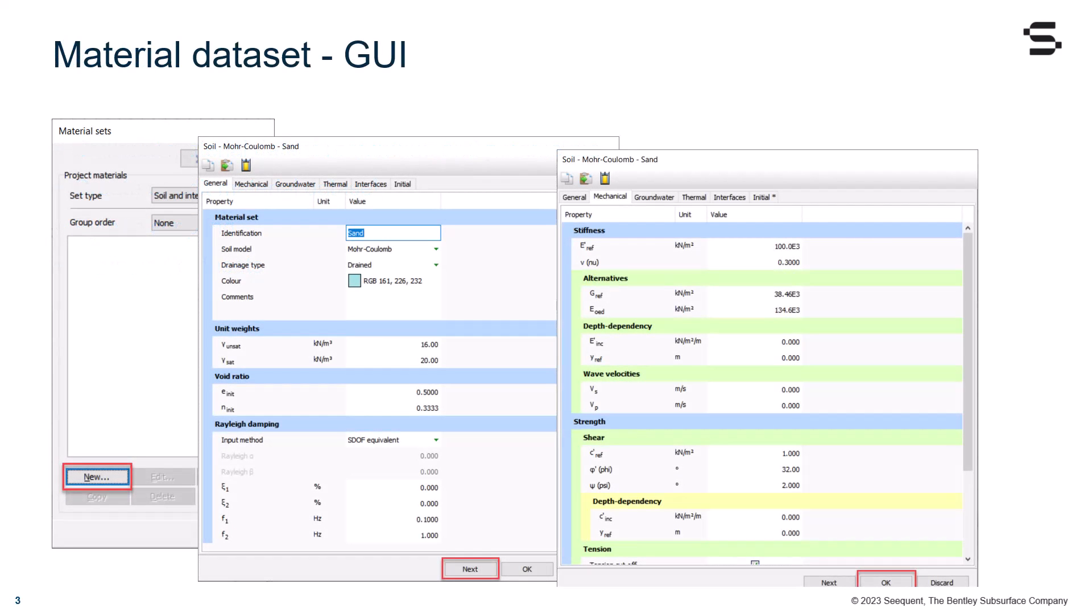To start with, almost everyone has created at least once a material using the Graphic User Interface. The typical sequence of windows includes the material sets window, and then the multiple tabs with the definition of the material properties.